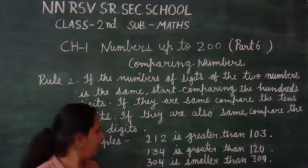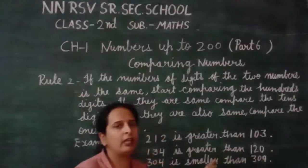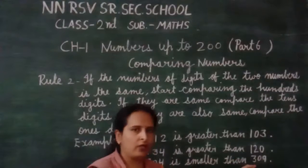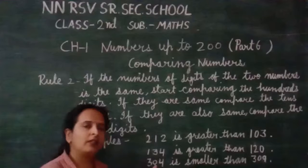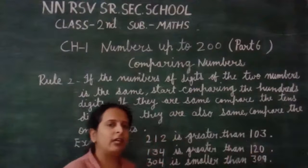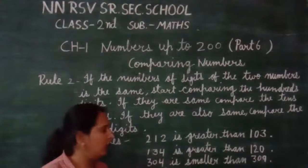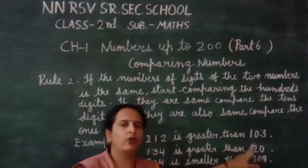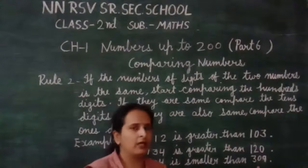In the next example, 304 is smaller than 309. First of all, we check the 100s digit — in both numbers it is 3. Then we check the 10s digit — in both numbers it is 0. Then we move to the 1s place. The 1s digit in 304 is 4, and in 309 it is 9. Which is bigger? 9 is bigger and 4 is smaller. So we can say 304 is smaller than 309.